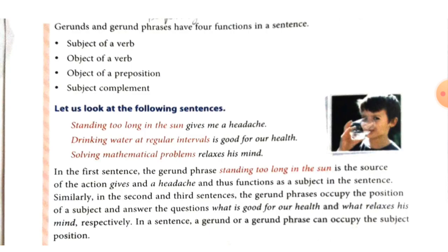Now, students, here we are going to read about gerund and gerund phrases. Gerund and gerund phrases have four functions in a sentence: first, subject of a verb; second, object of a verb; third, object of a preposition; and fourth, subject complement. One by one, we are going to read about each.